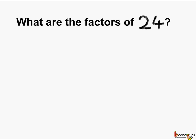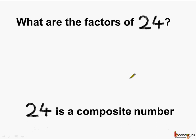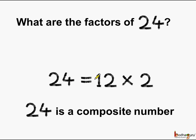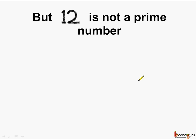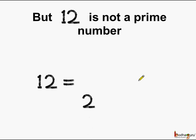First, let us find what are the factors of 24. We know 24 is a composite number, which means it has more than two unique factors. So we can write 24 as 12 multiplied by 2. Now here, 2 is a prime number, but 12 is not a prime number. So we can write 12 as 2 multiplied by 6.